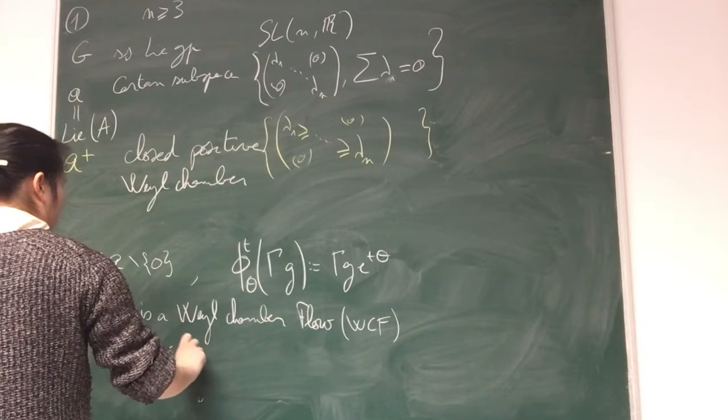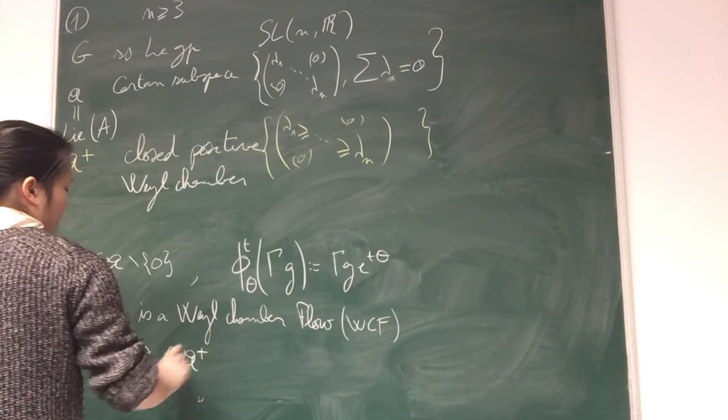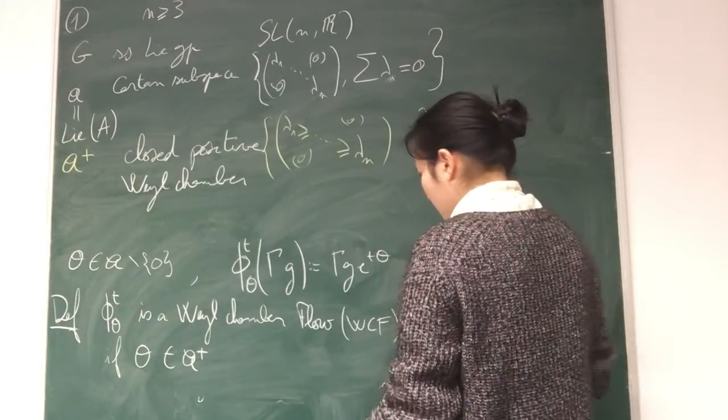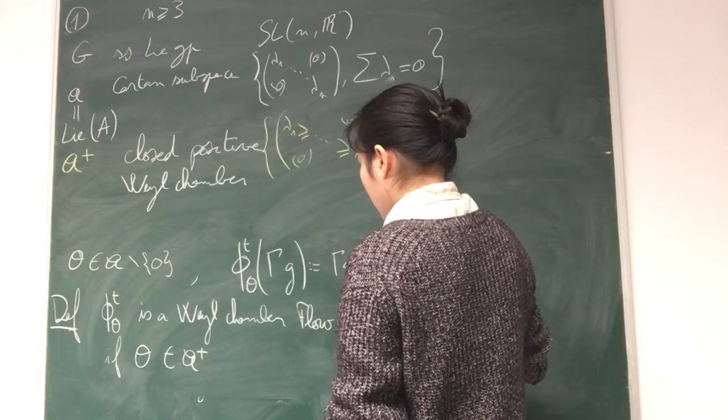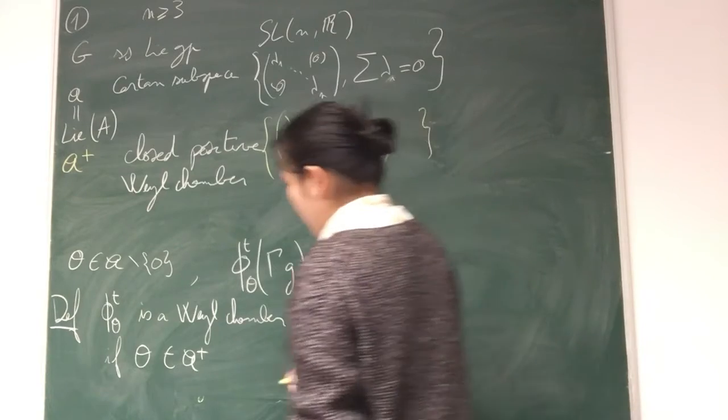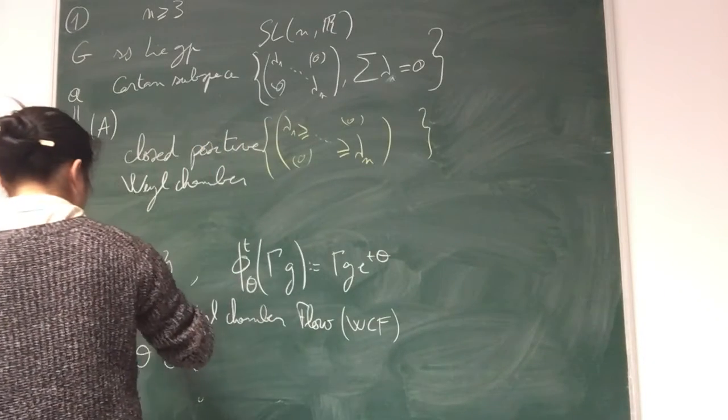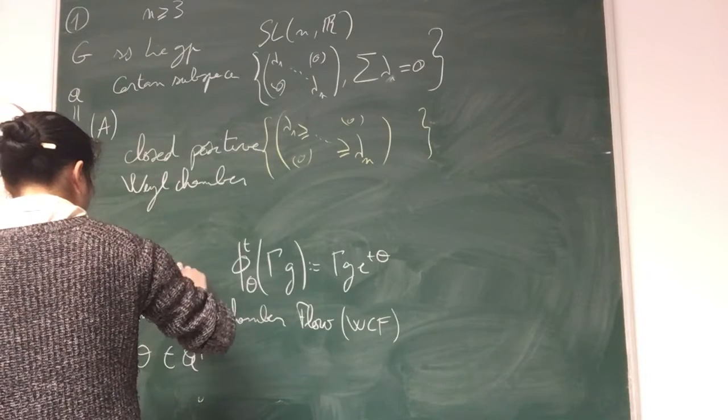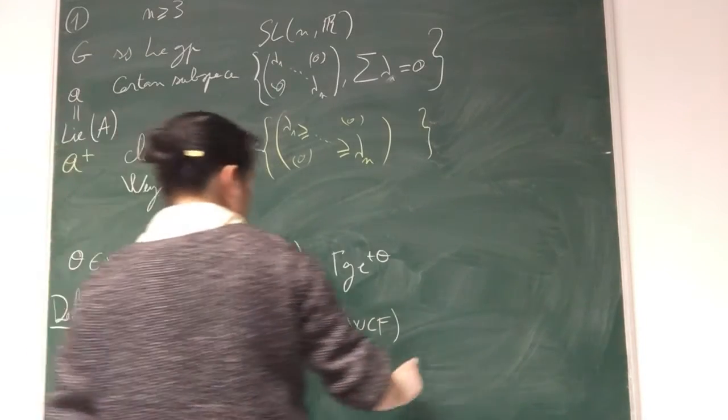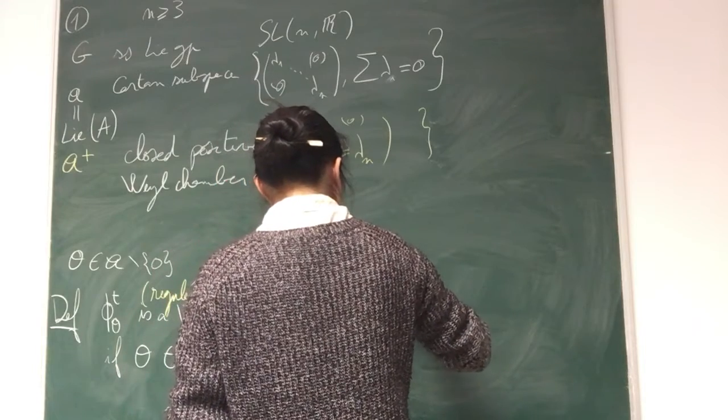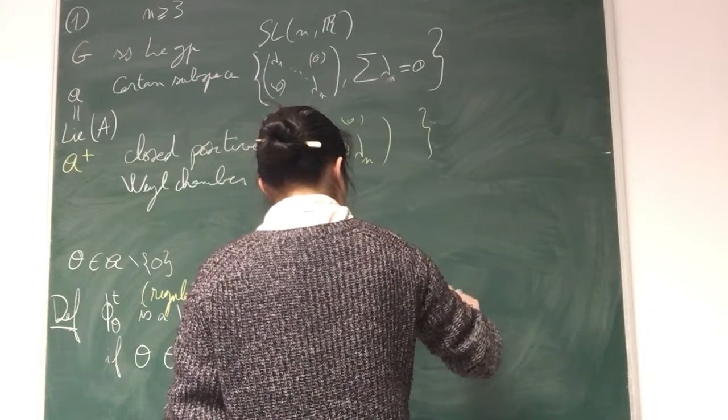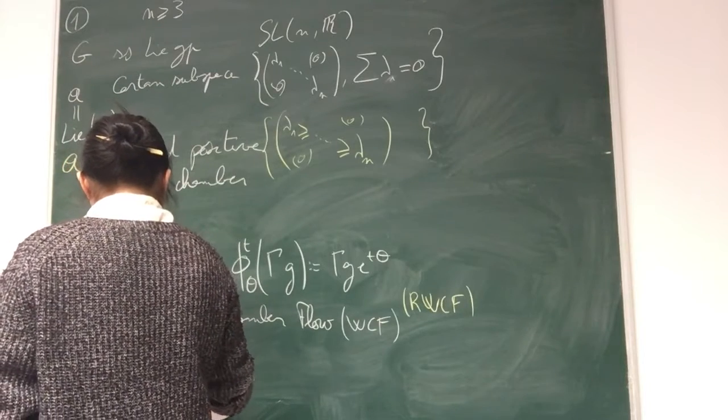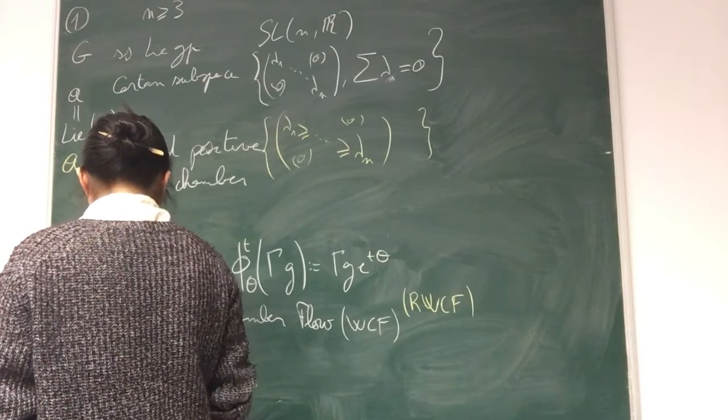I'm going to use a closed Weyl chamber. I'm going to say that it's a regular Weyl chamber flow if the vector is in the interior of the Benoist cone.